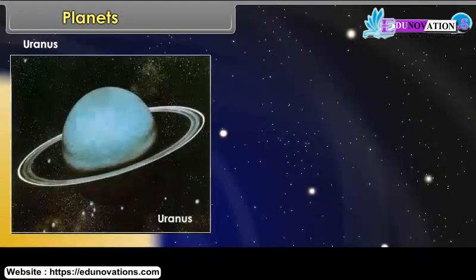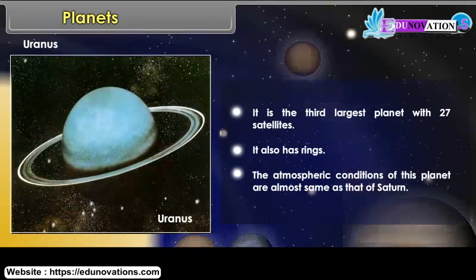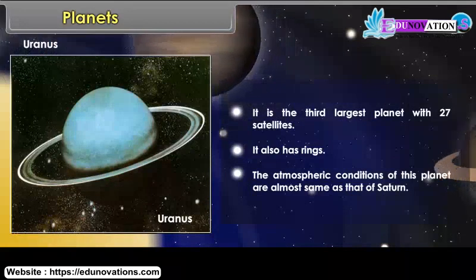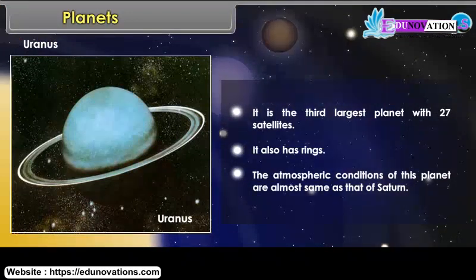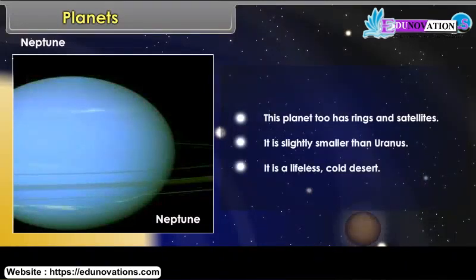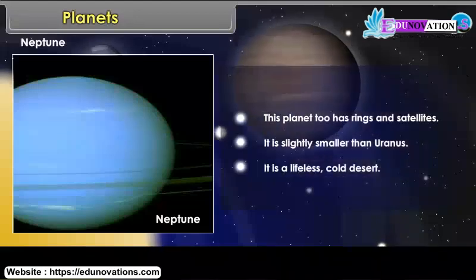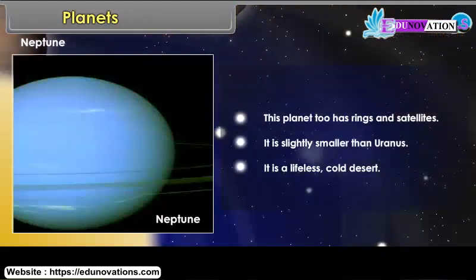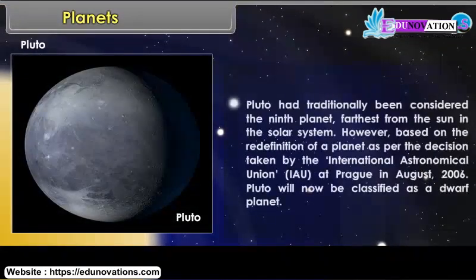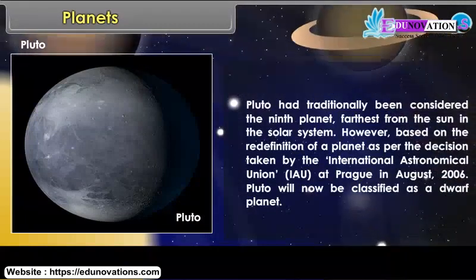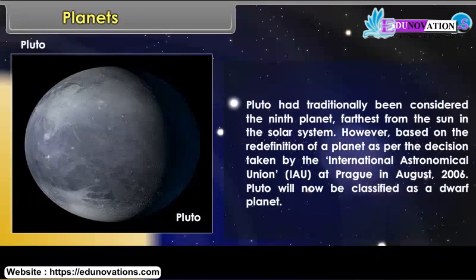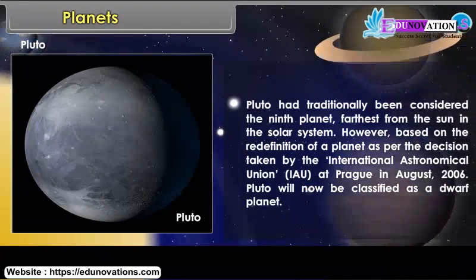The atmospheric conditions of Uranus are almost the same as that of Saturn. Neptune also has rings and satellites. It is slightly smaller than Uranus and is a lifeless, cold desert. Pluto had traditionally been considered the ninth planet, farthest from the Sun. However, based on the redefinition of a planet as per the decision taken by the International Astronomical Union (IAU) at Prague in August 2006, Pluto is now classified as a dwarf planet.